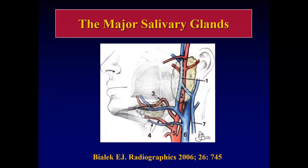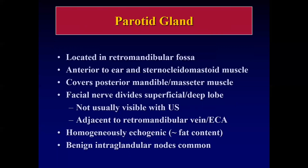When we think in terms of the major salivary glands, there are three. The two most commonly evaluated ones are the parotid and the submandibular. There is also the sublingual gland. The parotid gland is located in the retromandibular fossa, anterior to the ear and sternocleidomastoid muscle, and is easily accessible.